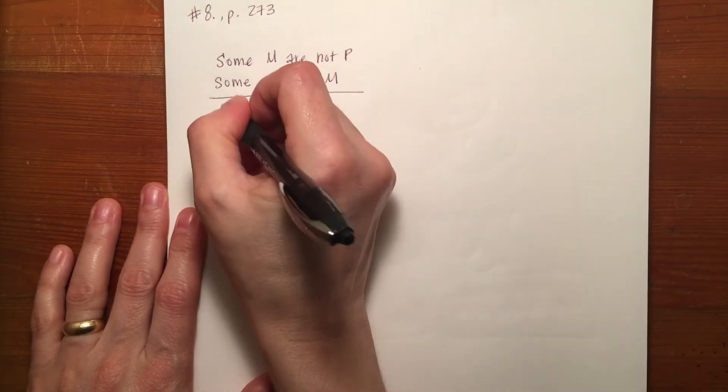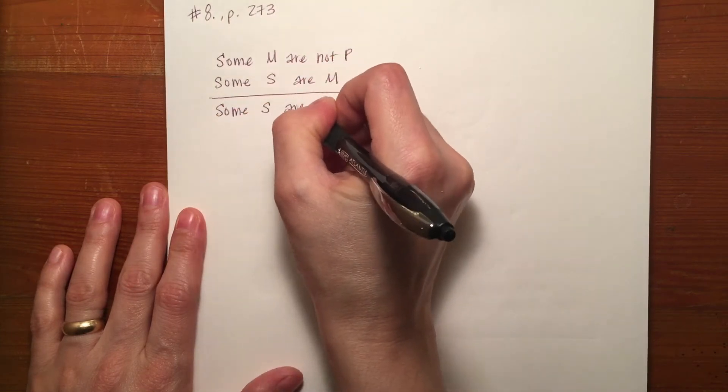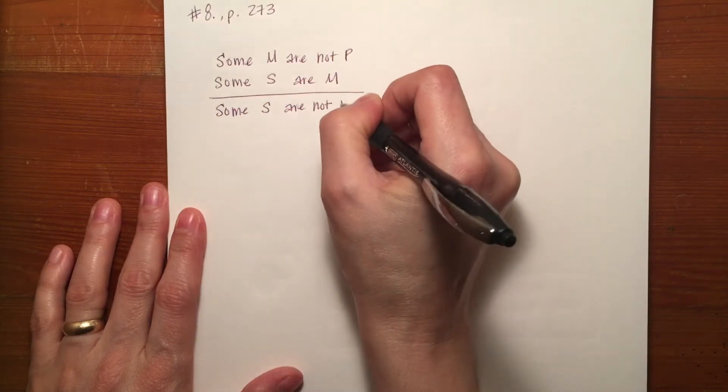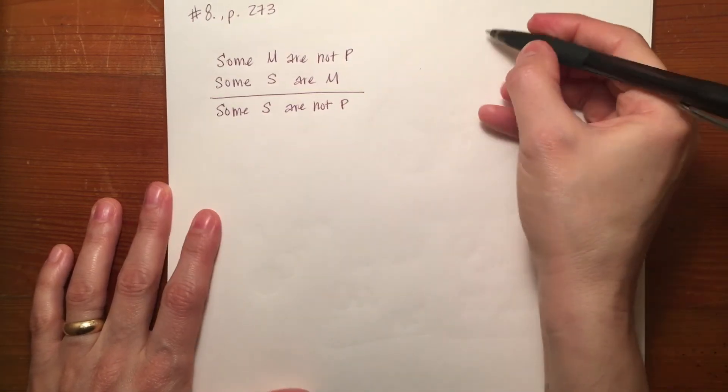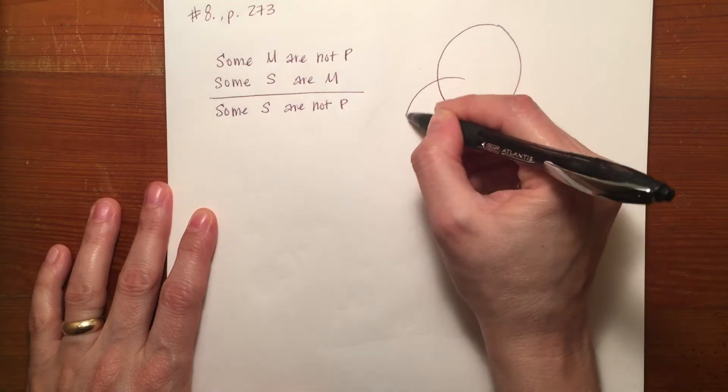therefore some S are not P. And we've been asked to draw a Venn diagram, so we'll do that.